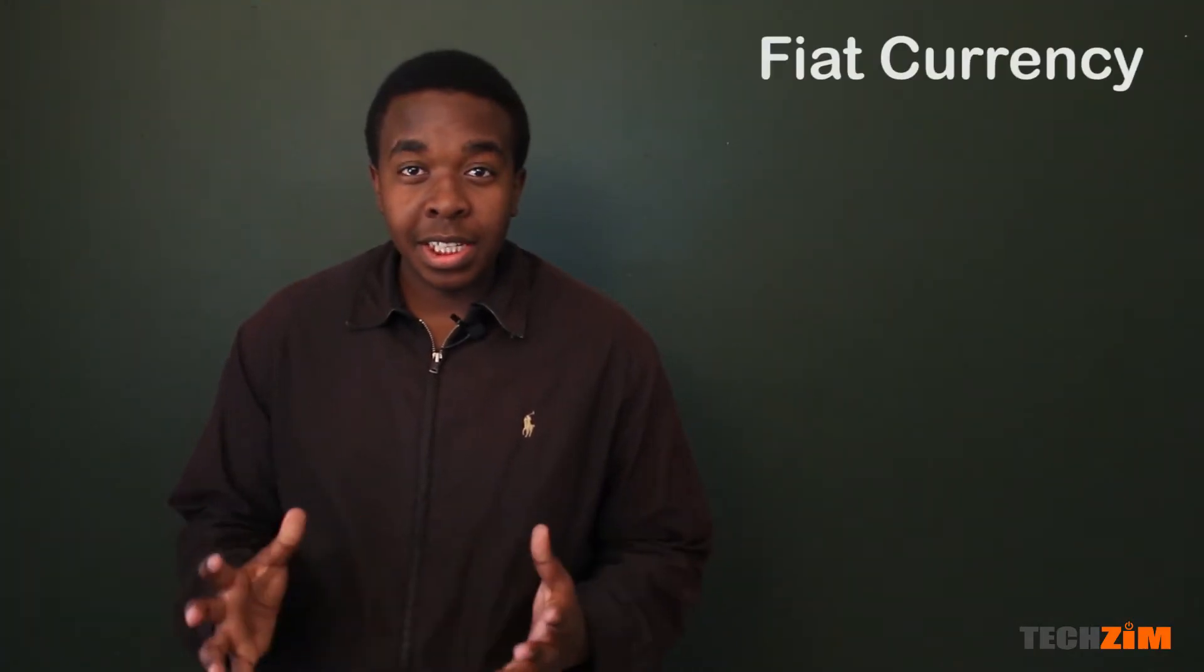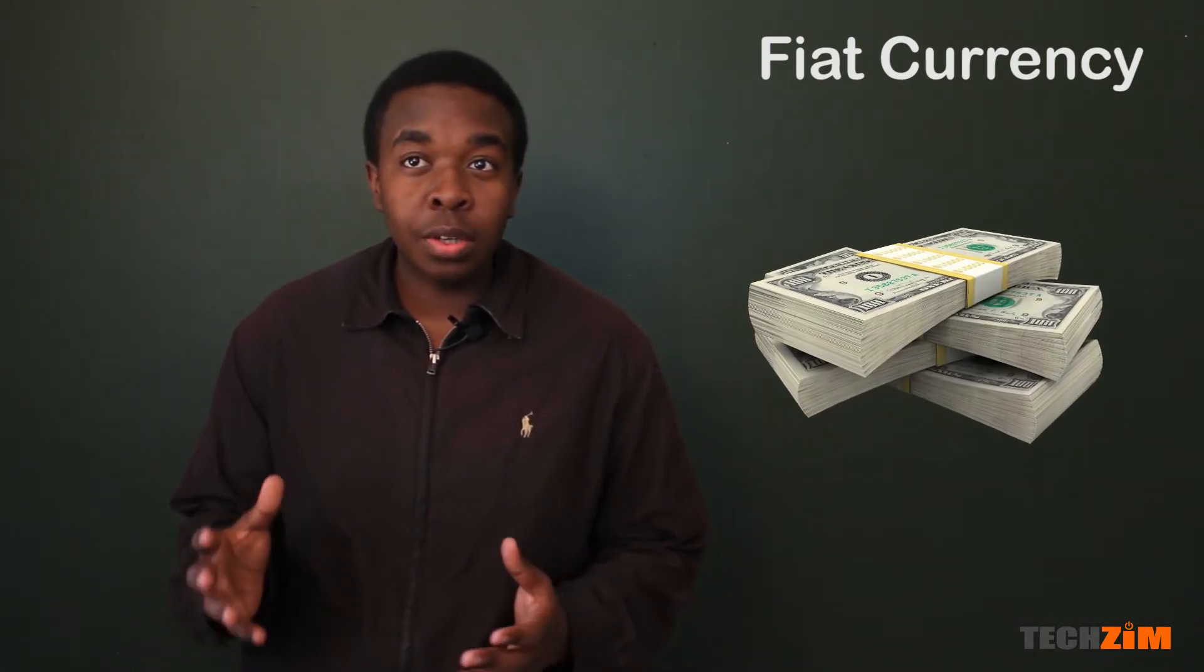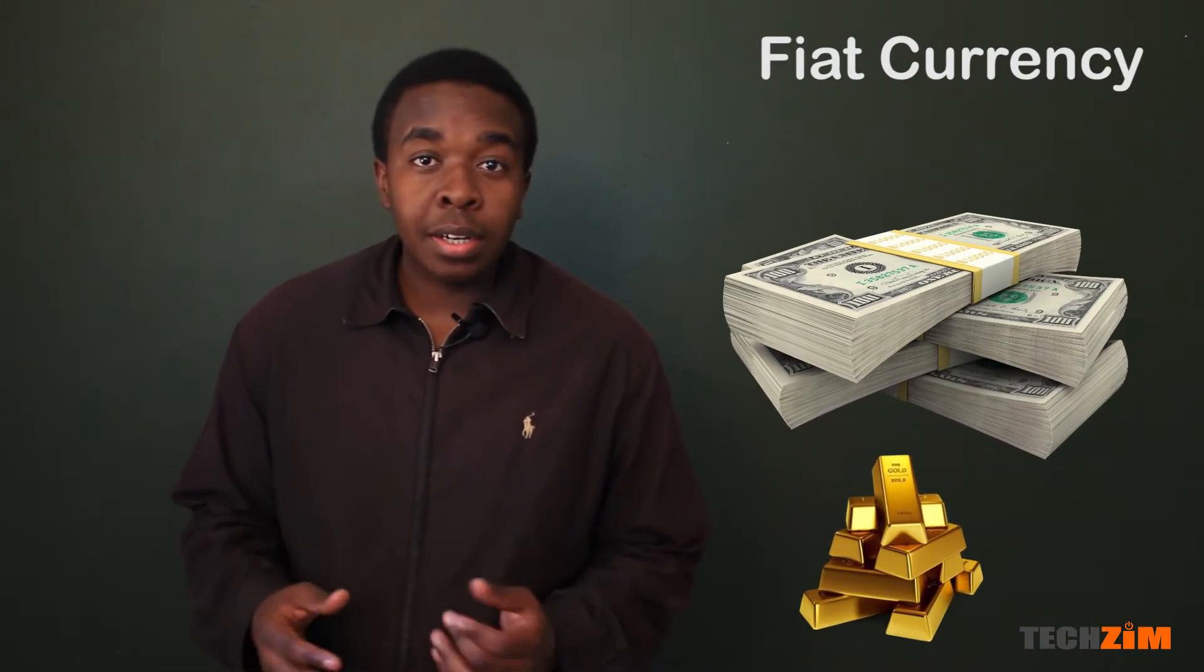To understand where Bitcoin gets its value, we need to understand fiat currencies, because these fiat currencies are not backed by any commodity like gold, and Bitcoin has no gold backing it. So let's take a look at a local example: the Zim dollar. It was a fiat currency since 1971.